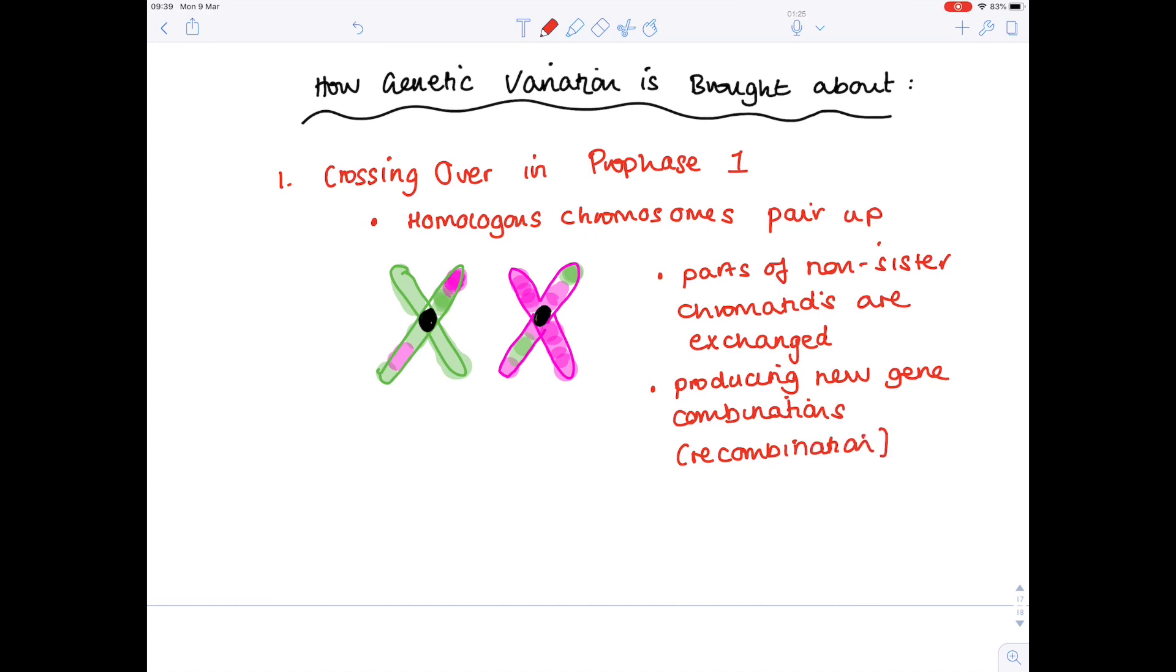Now this is so important because it produces a huge amount of genetic variation. And that's because it's entirely random as to where along the chromosome that the exchange of genetic material occurs.